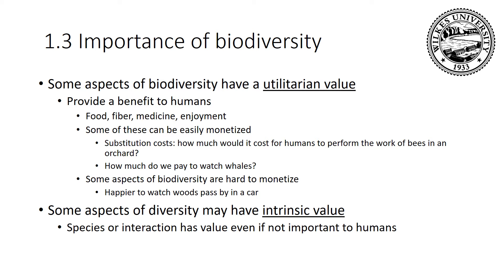Biodiversity is important to humans directly and indirectly. If it has direct value, we call this the utilitarian value — meaning it provides some benefit to humans. There are aspects of biodiversity we eat, such as domesticated crops like corn and soybean, or wild foods we get from nature such as fish, deer, and rabbits. The wild can also provide fiber used for paper and clothes. Many plants and animals can provide medicine for humans, and the wild provides a source of enjoyment for people.